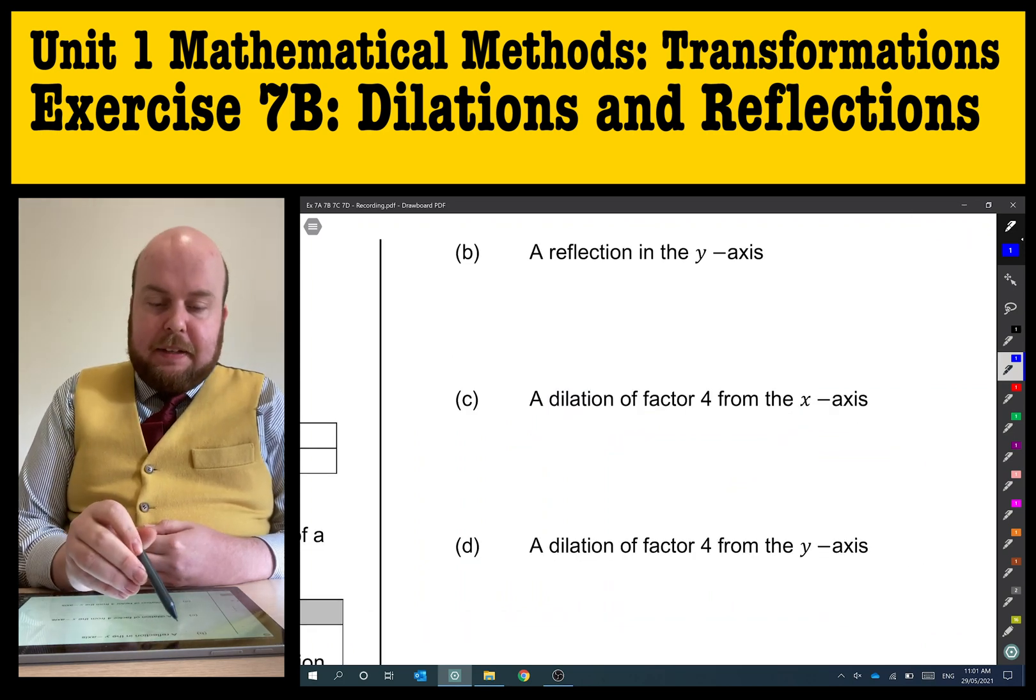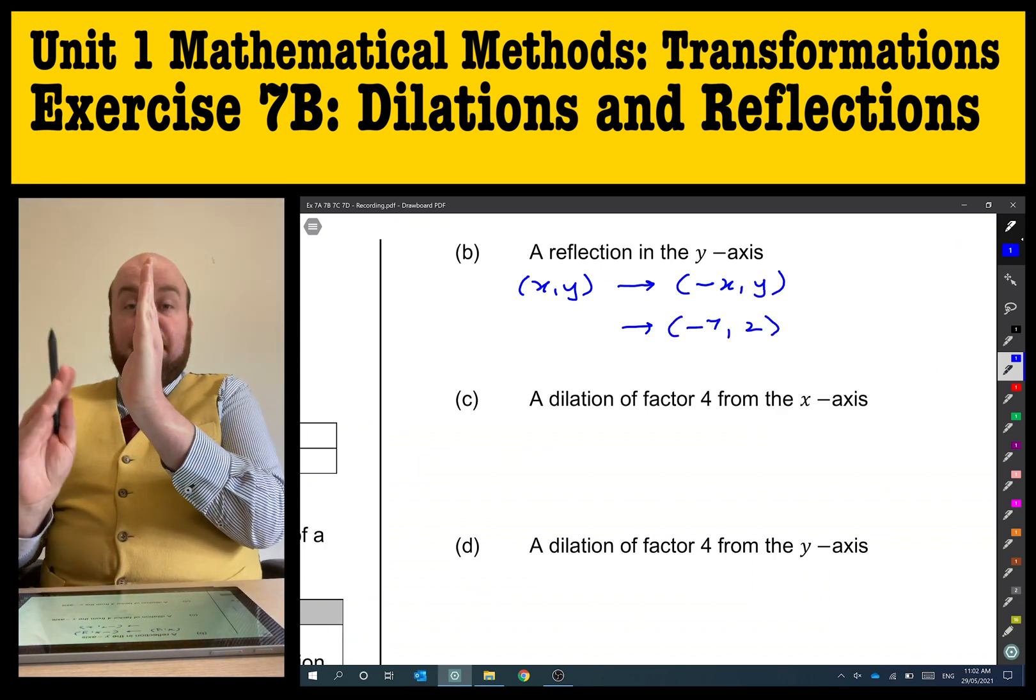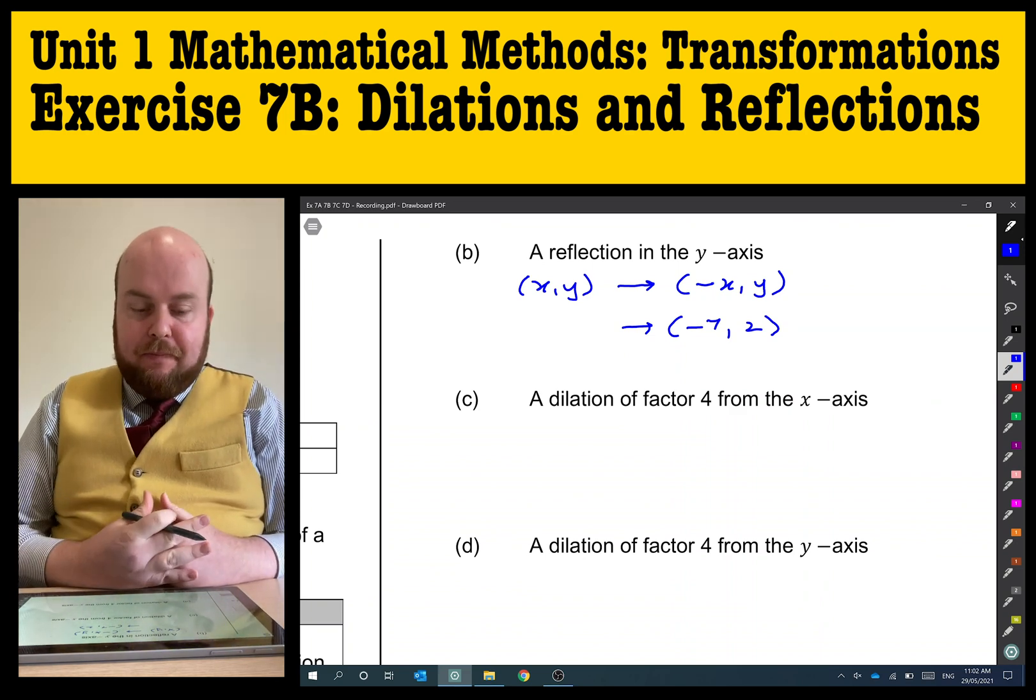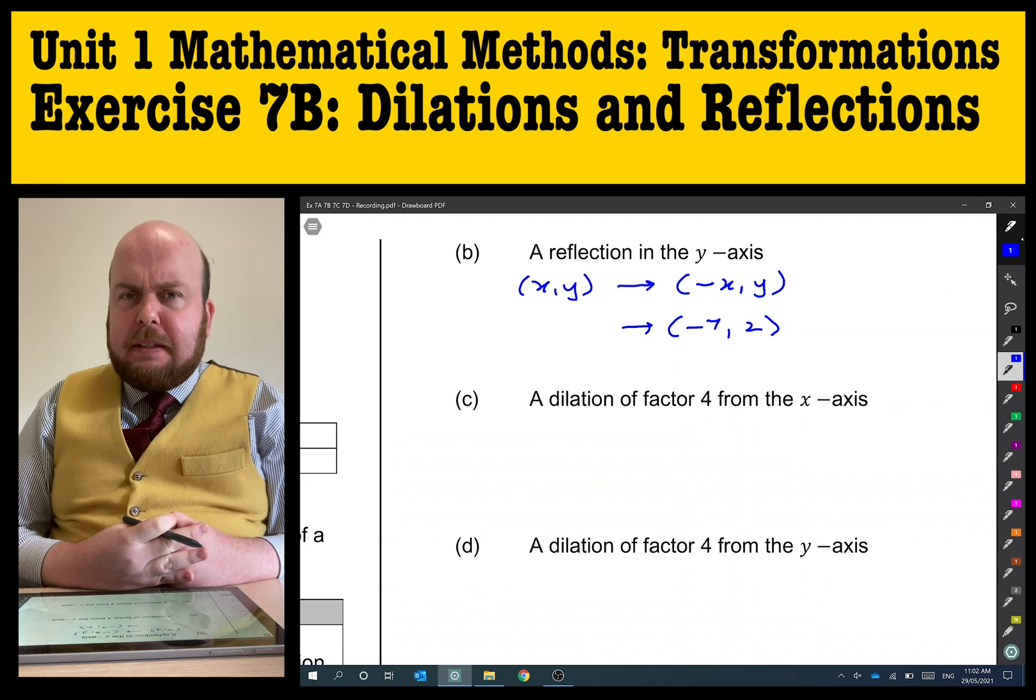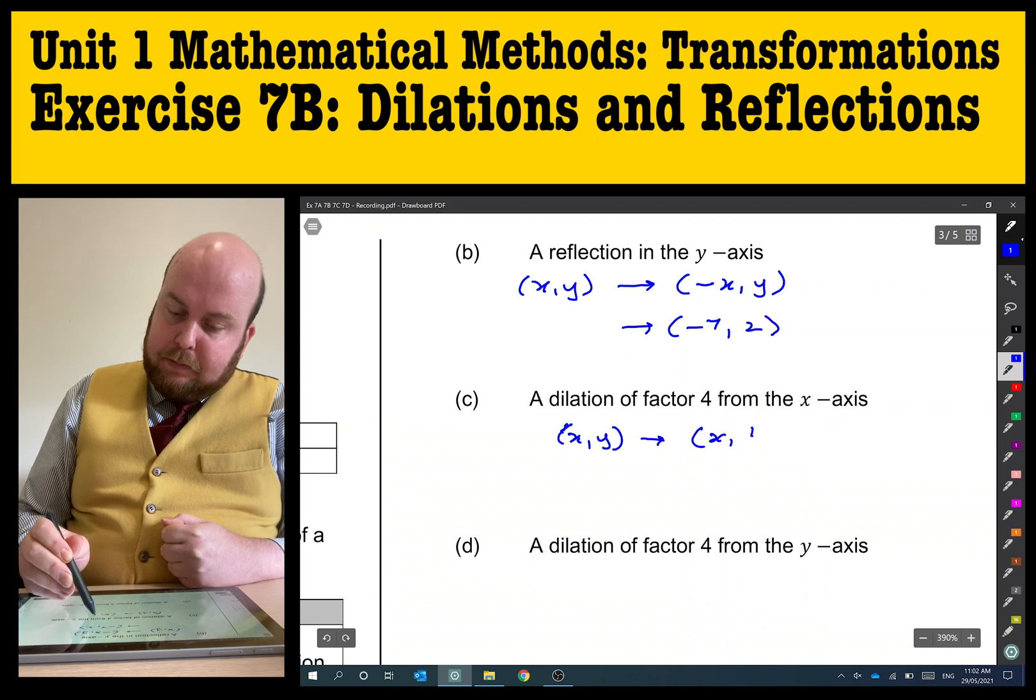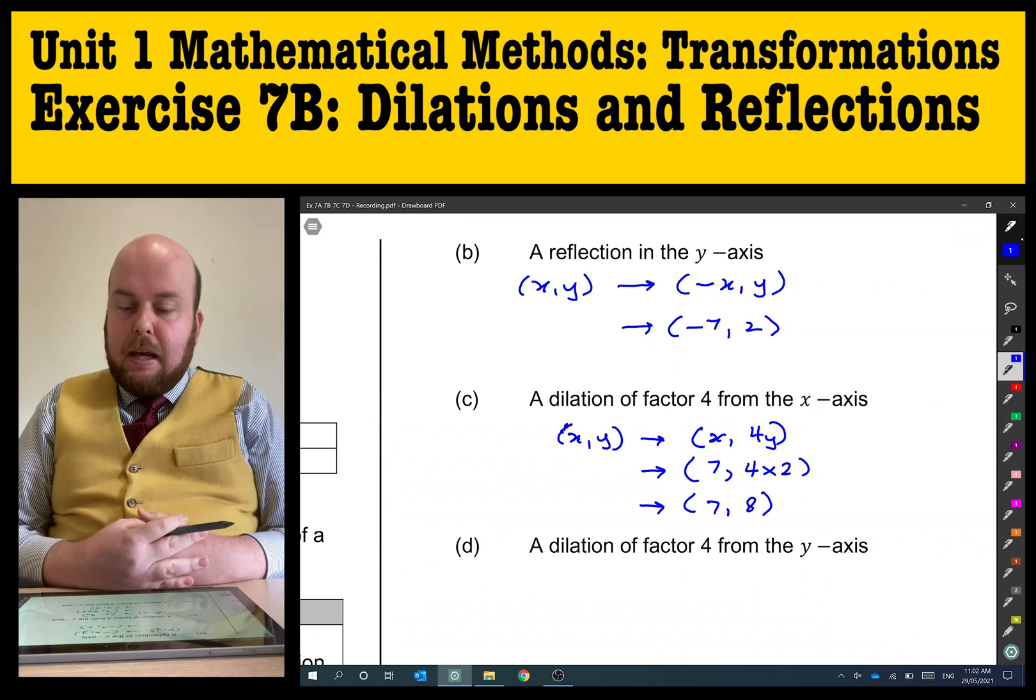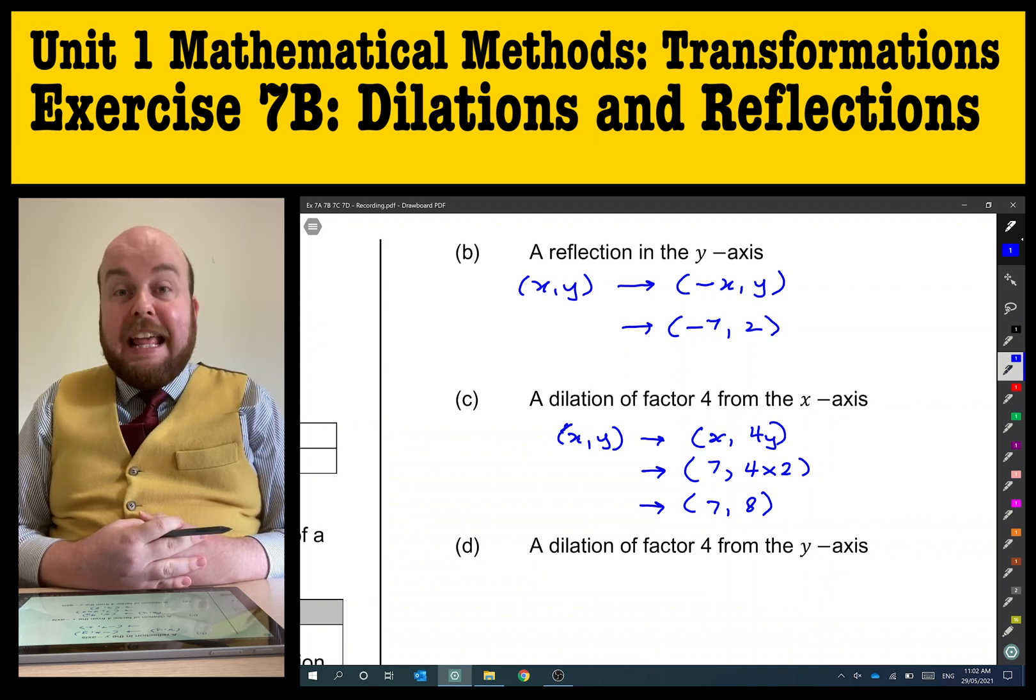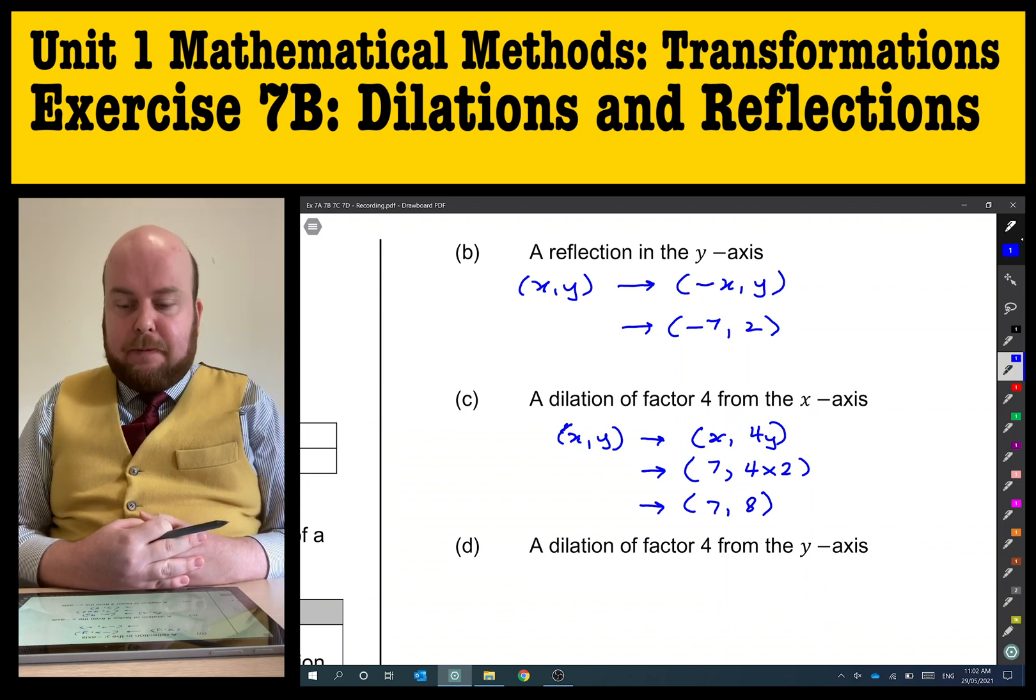B, a reflection in the y-axis. We have just simply moved that point to the other side of the y-axis. It becomes (-7,2). C, a dilation of factor 4 from the x-axis. It's from the x-axis, so it's going to affect the y values. I've multiplied the dilation factor of 4, so I multiply the y value by 4. The y value originally was 2, so 2 times 4 gets to be 8.